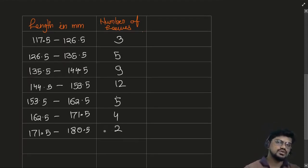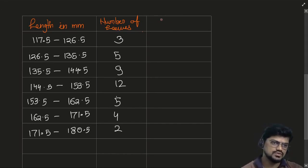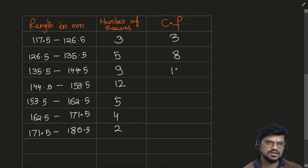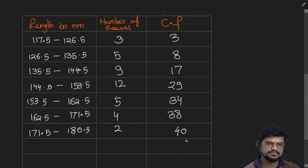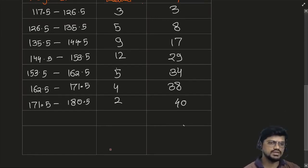Whenever you have to find the median, you have to make a cumulative frequency table — you learned this in the last class. So the cumulative frequencies are: 3, 8, 17, 29, 34, 38, and 40. So your summation of f is 40. This is your cumulative frequency.